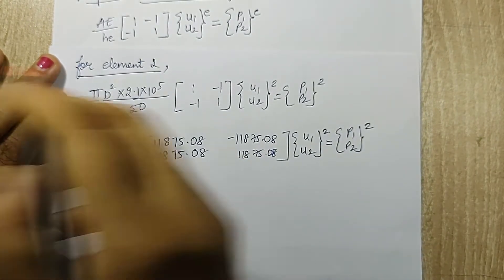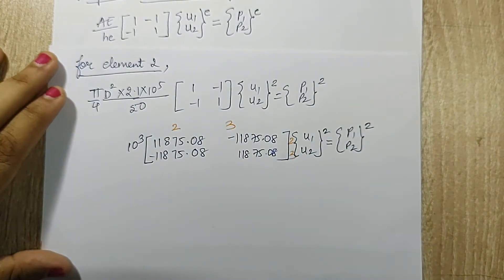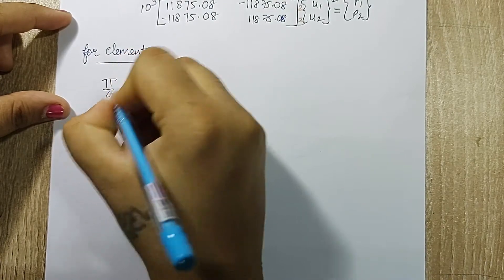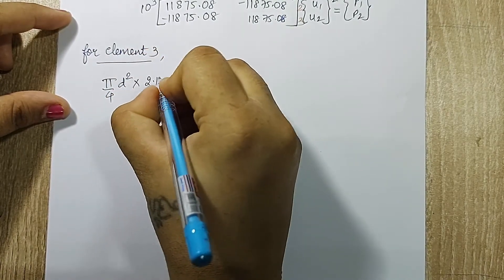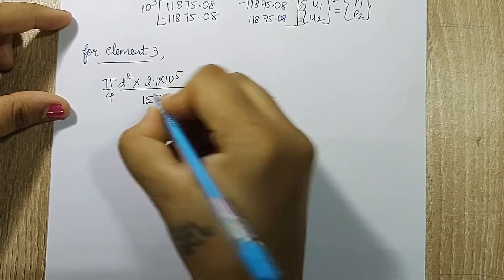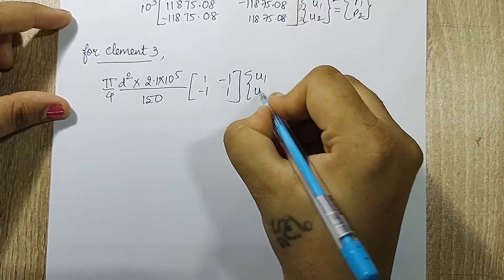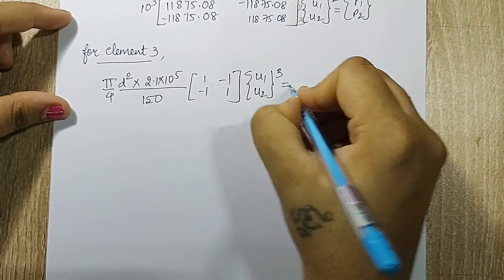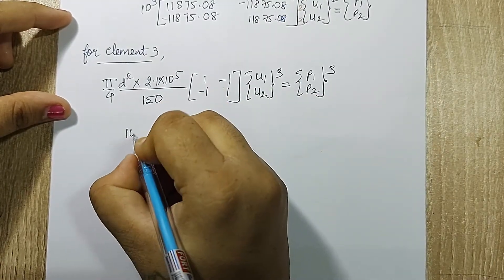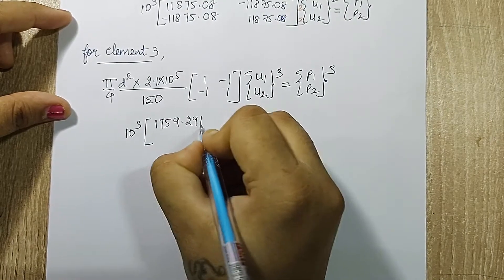Element 2 is between node 2 and 3. Next I will solve for element 3. It will be (π/4)d² × 2.1 × 10⁵ and the length is given as 150. On solving this I get 10³ outside and the value inside is 1759.291.